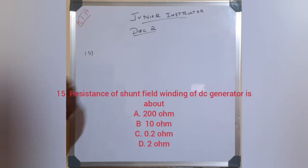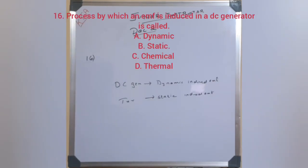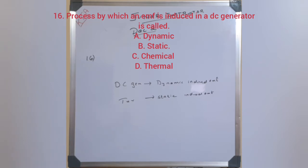The process by which EMF is induced in a DC generator is called dynamically induced EMF. Since the DC generator has a rotating armature, the EMF is dynamically induced. In a transformer, there is no rotating part, so the EMF is statically induced. For DC generators and DC motors, it is dynamically induced EMF. Option A is correct.